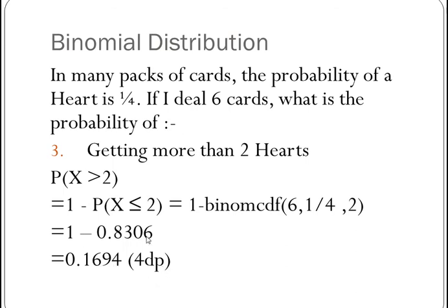Now a quick thing, if you're ever taking stuff away from 1, each one of these numbers, so the 9 and the 1 have to add up to 9, the 3 and the 6 have to add up to 9, the 9 and the 0 have to add up to 9, but the last decimal place has to add up to 10. So if I had 0.8306, I know it's 0.1694 straight away, and I haven't had to type it into my calculator. Okay, so that's binomial.